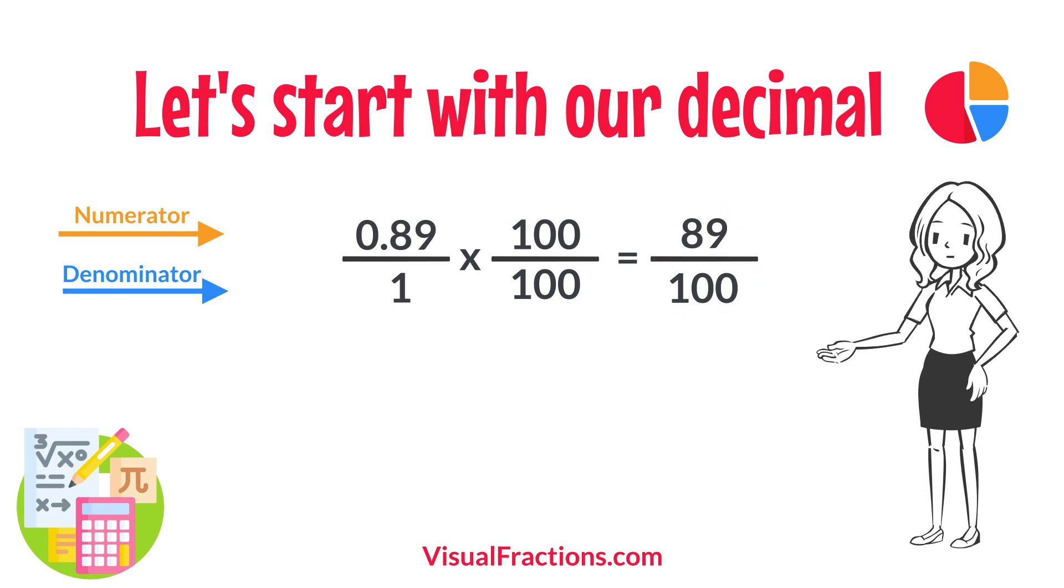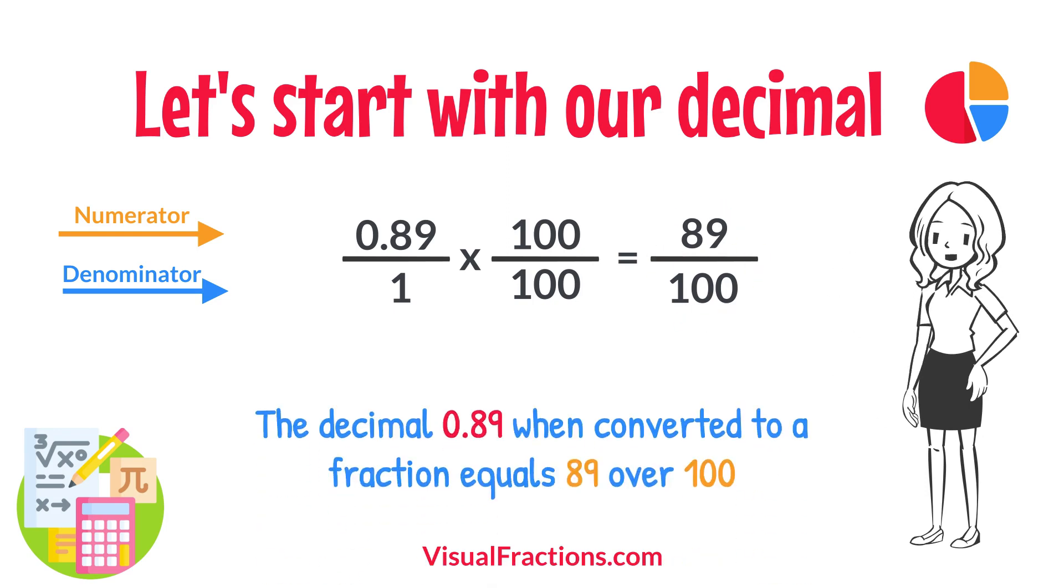And there you have it. The decimal 0.89 when converted to a fraction equals 89 one hundredths. This fraction is in its simplest form and cannot be further simplified.